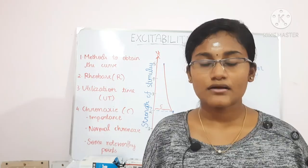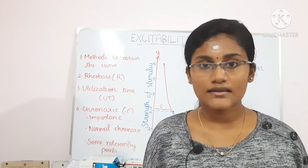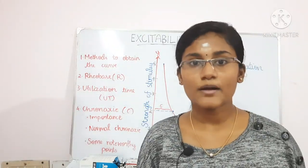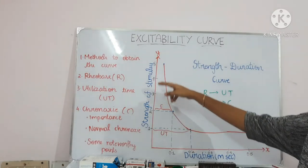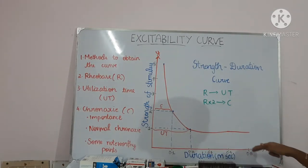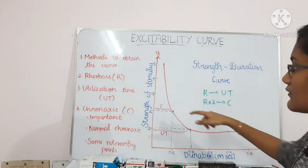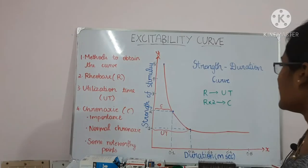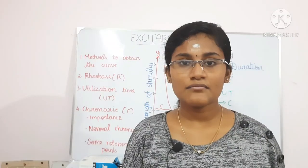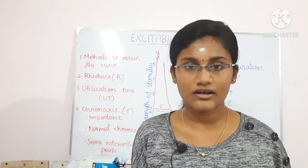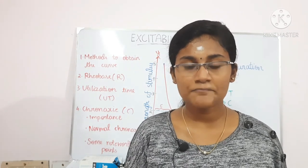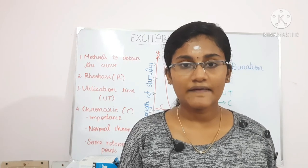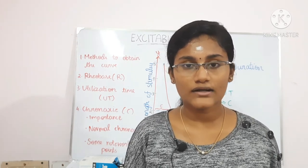To summarize: the three basic characteristics for the excitability curve are rheobase, utilization time, and chronaxi. When plotting the graph, put the strength of the stimulus on the y-axis and duration on the x-axis, with duration in milliseconds and strength in volts. Rheobase is the minimum strength required to stimulate a tissue whatever the duration, and is also called the threshold strength. The time taken by the tissue to respond to the rheobase strength is called the utilization time.